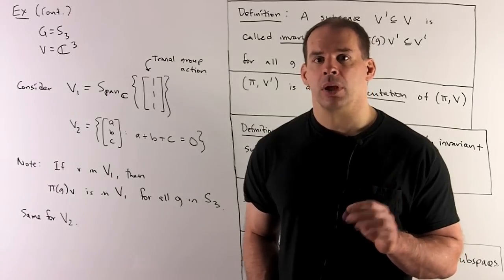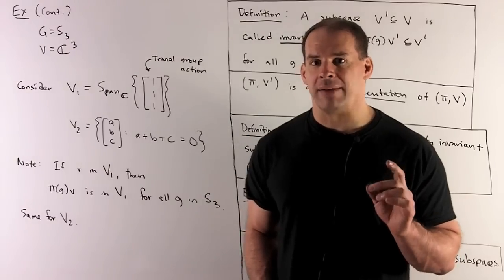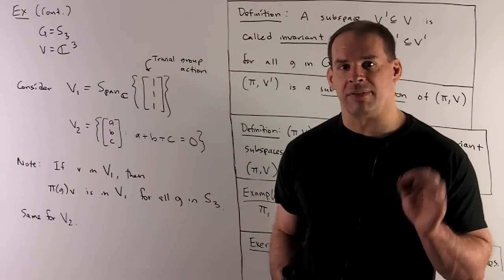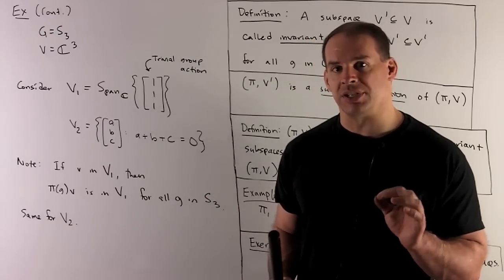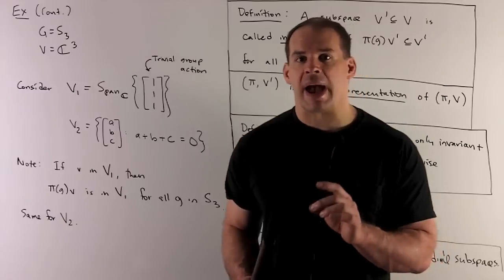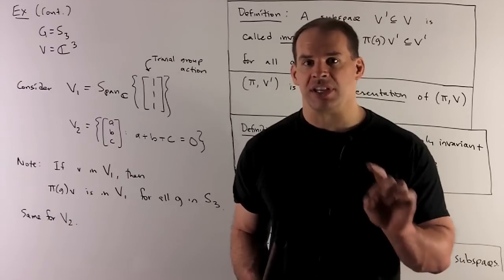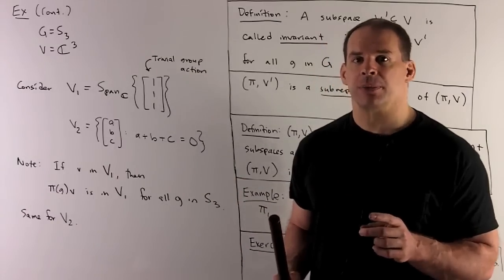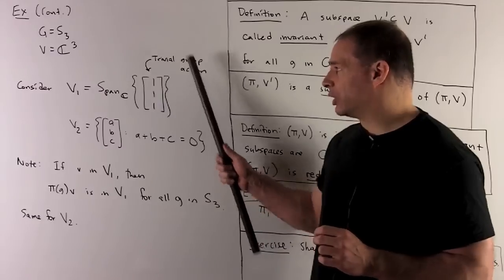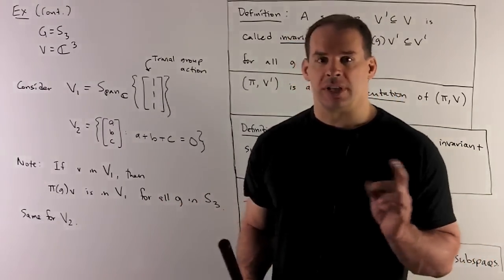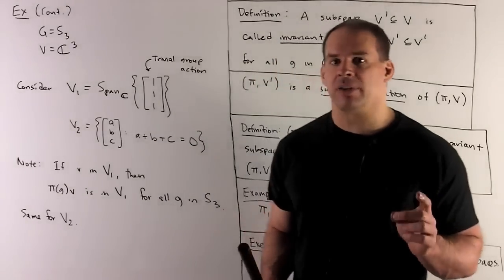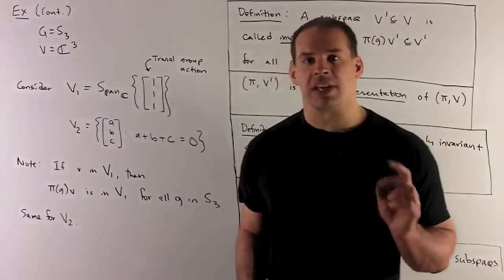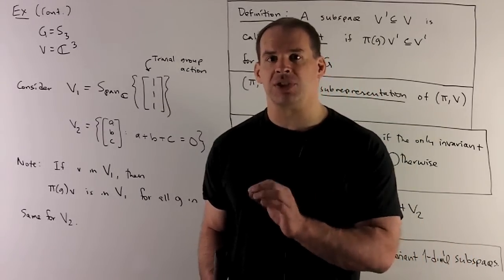Let's take another look at π₁. We want to consider the following two subspaces of ℂ³. We'll have V₁ equal to the span of (1,1,1), and V₂ equal to the subspace of vectors (a,b,c) where a+b+c=0. The group action on ℂ³ is just to permute the entries. If we take (1,1,1) and permute the entries, we get (1,1,1) back, so the group action on V₁ is trivial. For V₂, permuting the entries will preserve the defining property — if I permute the entries and take their sum, I still get 0 — so the group action carries V₂ back to itself.